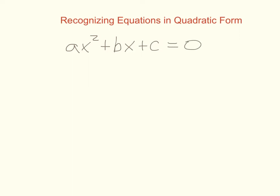We know this is quadratic because the square is the biggest degree. What we want to note is the relationship of the exponents. The middle term's exponent is one, which is half of the biggest exponent. When those two things happen along with no variable in the third term, it's in quadratic form. The first term's exponent is double the second term's, and then there's no variable in the third term.